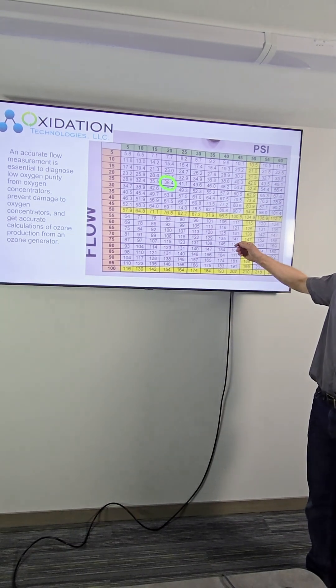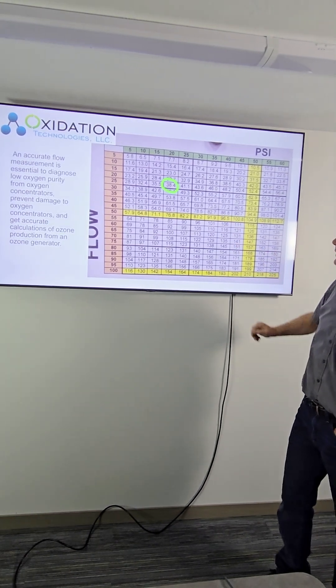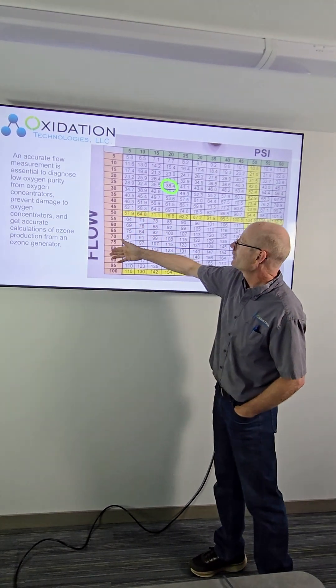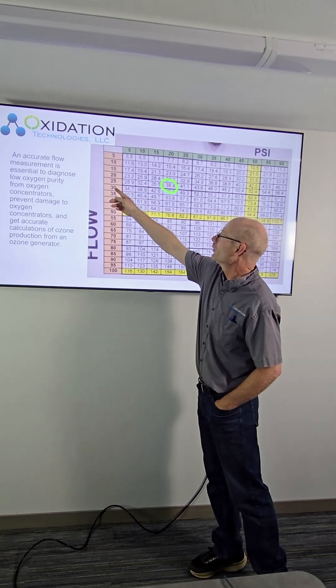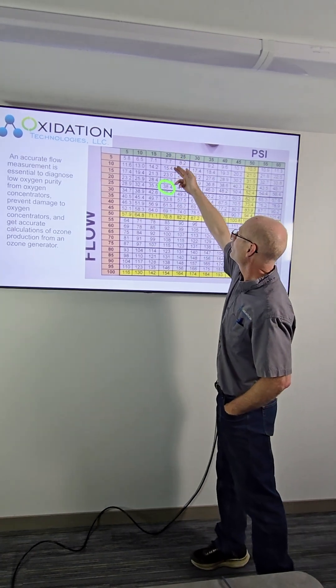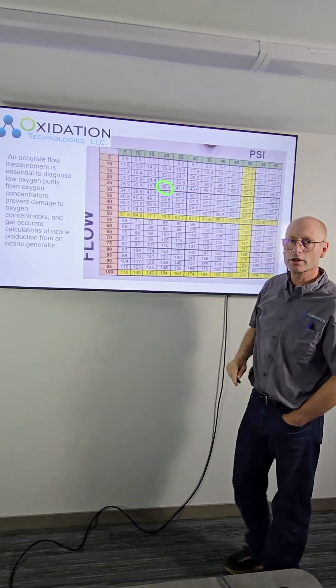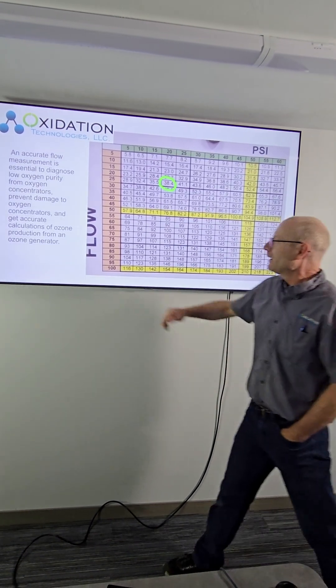Here's the third method, you can use a chart something like this. Over on the left hand this is the flow that you're reading, it goes by fives but it was around 25. Our pressure was 20 psi and again the chart will give you nearly 40 SCFH of flow.